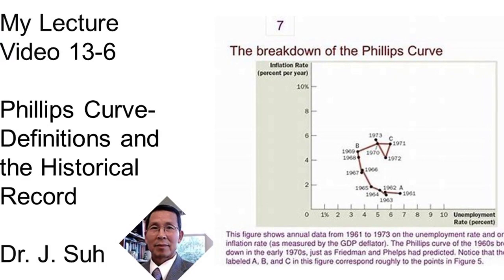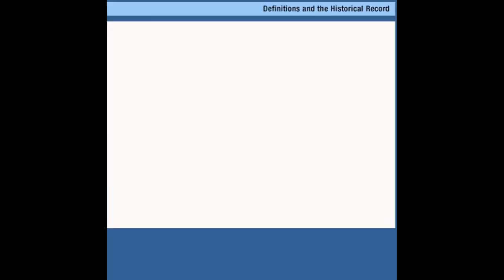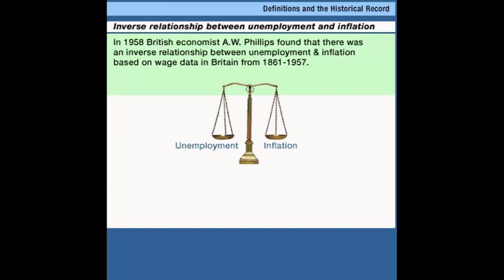A British economist, A.W. Phillips, observed an interesting relationship between inflation and unemployment. Looking at data from Britain over a very long period of time, he saw that there was an inverse relationship between the unemployment rate and the inflation rate. That is, when the unemployment rate was low, the rate of inflation tended to be high and vice versa. In this discussion, we're going to try to account for Phillips' observation as we develop a tool that represents his conclusion called the Phillips curve.